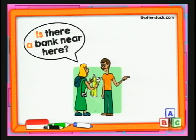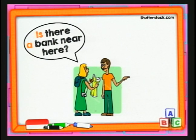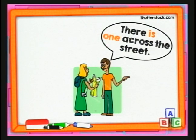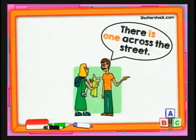Ahí tenemos a una turista preguntando a un joven que encuentra en la calle: 'Is there a bank near here?' ¿Qué le está diciendo? Le está preguntando: hay un banco cerca de aquí. Miren que la pregunta está en singular, y como estamos haciendo la pregunta en singular, tenemos que responder en singular. Como dice: 'Yes, there is one across the street.' Is there a bank near here? Yes, there is one — hay uno — across the street — cruzando la calle. Y también estamos recordando vocabulario de localidades: across the street, across from the street, opposite, in front, in front of, next to, etcétera.